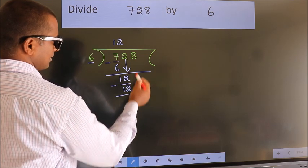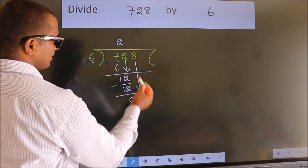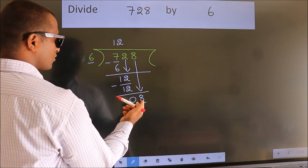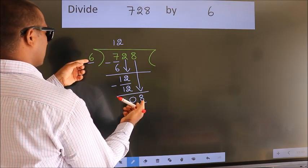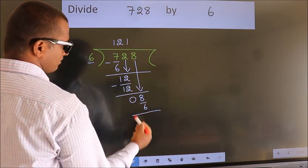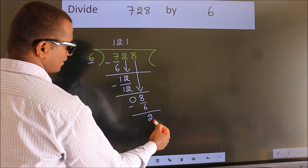After this, bring down the next number. So 8 down. So 8. A number close to 8 in the 6 table is 6 times 1, 6. Now we subtract, we get 2.